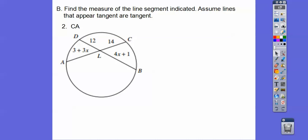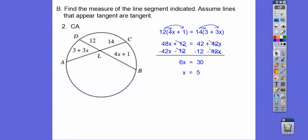This one says same thing, so intersecting chords, piece times piece equals piece times piece, distribute. We'll subtract 42x from both sides and subtract 12 from both sides, we get x equals 5.